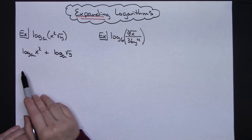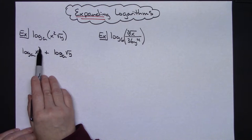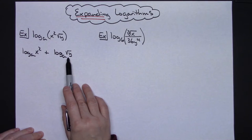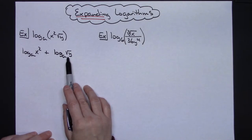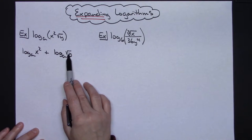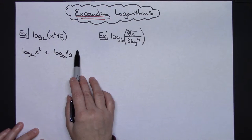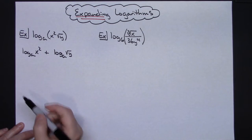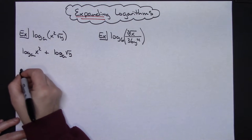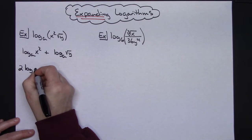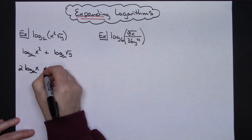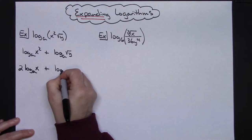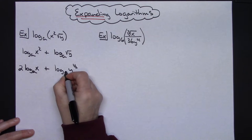This is x squared. In my classroom we call this jumping the frog — I can take that exponent and jump it down in front. Over here, I can't do anything directly with the square root of y, but if I rewrote the square root of y in exponential form I would have a one-half exponent up there, and I could also jump the frog on that one.